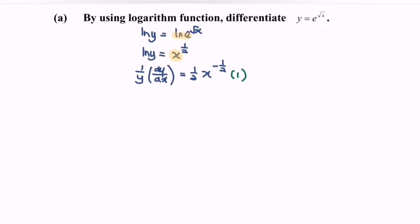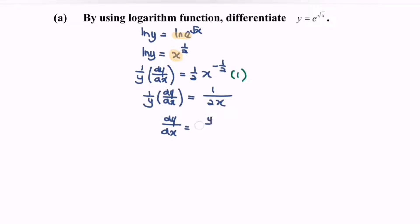Rewriting the situation: 1 over y multiplied with dy/dx equals 1 over 2x. As we all know, y is equal to e to the power of square root of x. So finally, dy/dx equals e to the power of square root of x, divided by 2x.